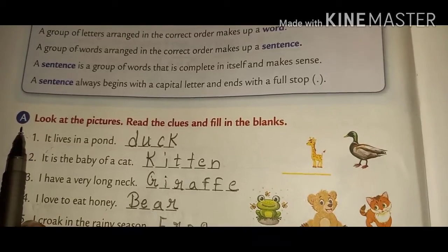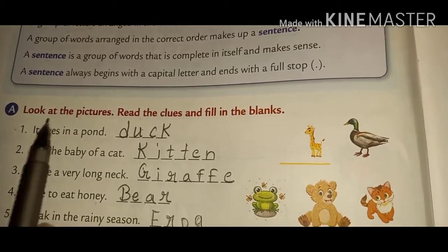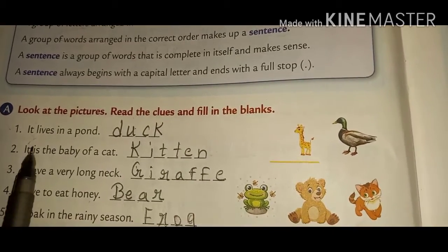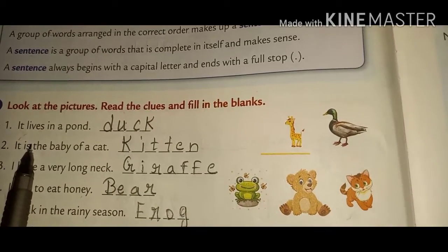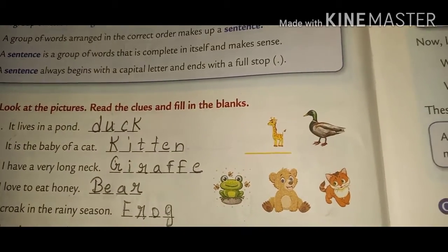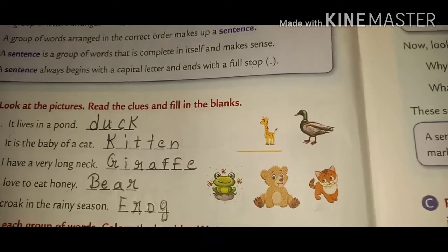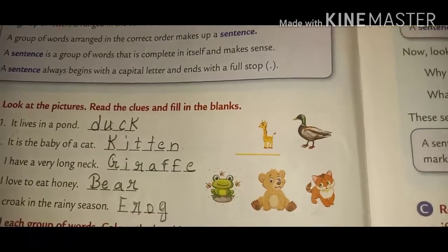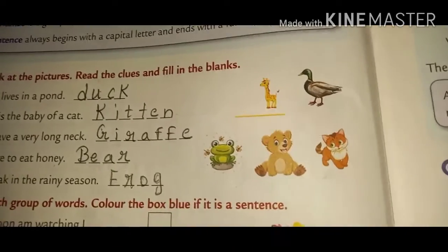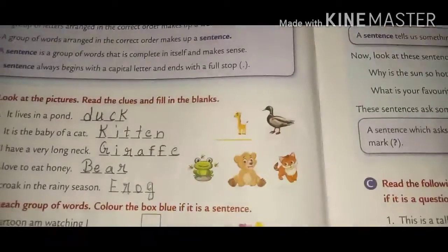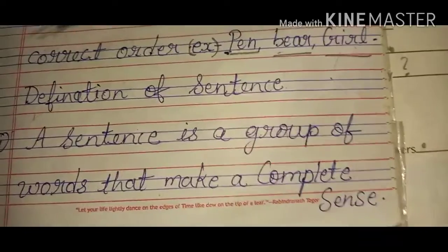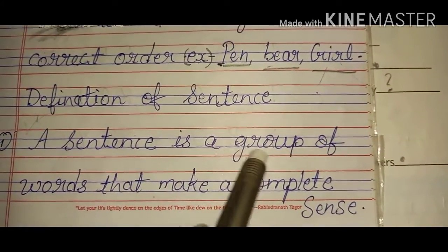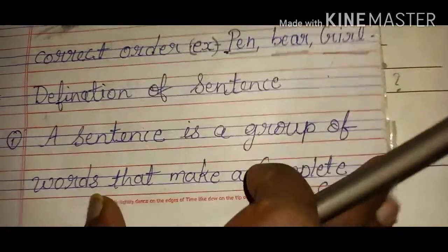Exercise A: look at the pictures, read the clue, and fill in the blanks. Before we start with the exercise, I want to again repeat the definition of a sentence which I had mentioned in the copy. Jaisi ki maine aapko copy mein likhwaya tha, bachon, wohi definition hum phir se ek baar dekh lenge.